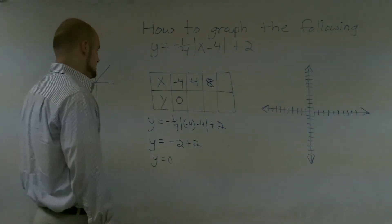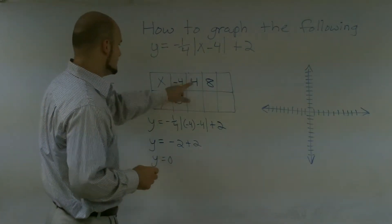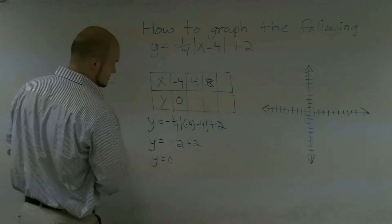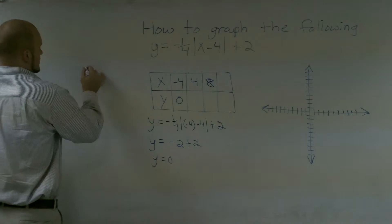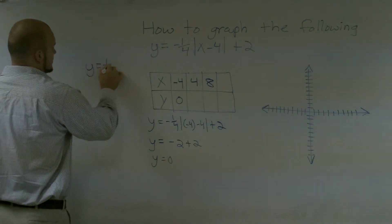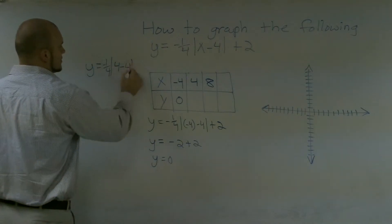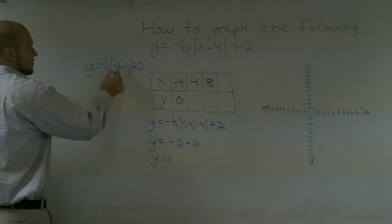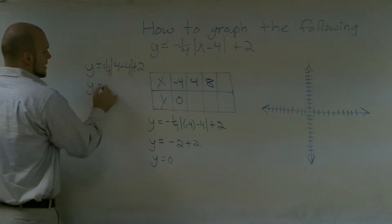Alright? Now let's go ahead and look at the next one. y equals negative 1/4 times 4 minus 4 plus 2. 4 minus 4 is 0. 0 times 1/4 is 0 plus 2. y equals 2.